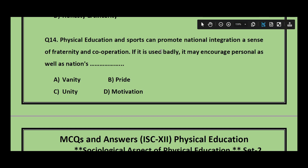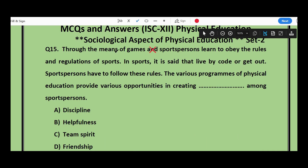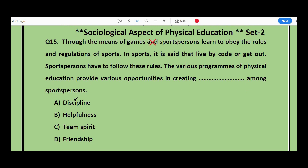Question number 14: Physical education and sports can promote national integration, a sense of fraternity and cooperation, but if used badly it may encourage personal as well as national __ — vanity, pride, unity, or motivation? The answer is vanity. Question number 15: Through games and sports, persons learn to obey the rules and regulations. Sports persons have to follow these rules. Various programs of physical education provide opportunities in creating __ among sports persons. The answer is discipline.